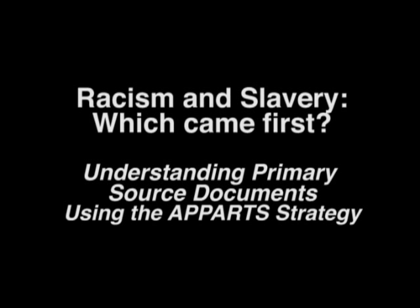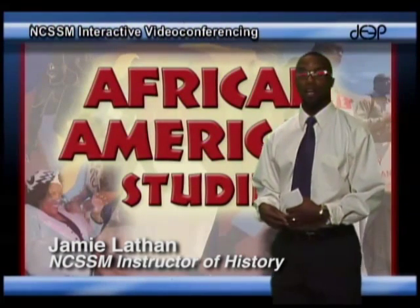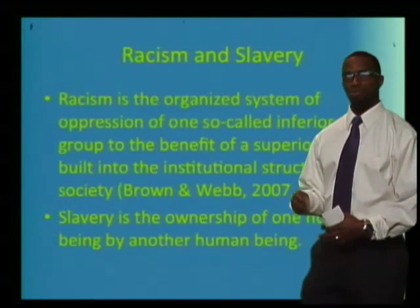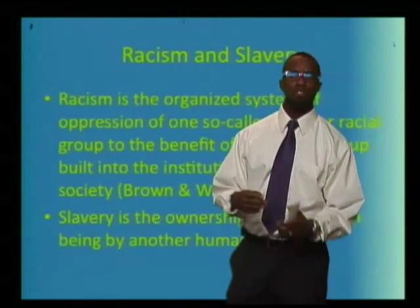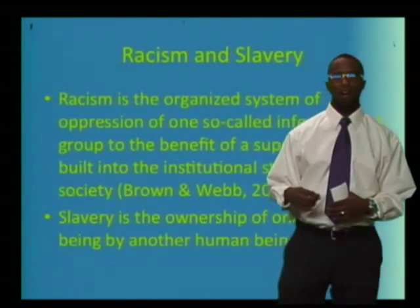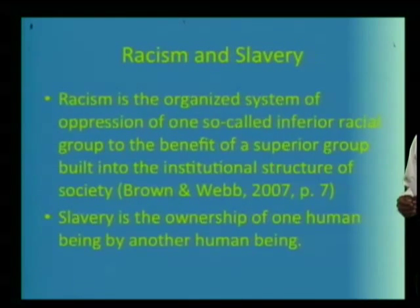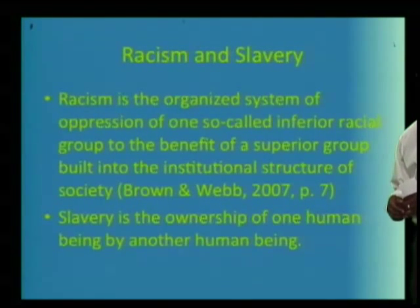Today in African American Studies, I'd like to do a primary source investigation analyzing the concept of racism and the institution of slavery. Racism and slavery — are they two sides of the same coin? Does one precede the other? And does that even matter? Let's start this investigation by defining those two terms. Racism is the organized system of oppression of one so-called inferior racial group to the benefit of a superior group, built into the institutional structure of society.